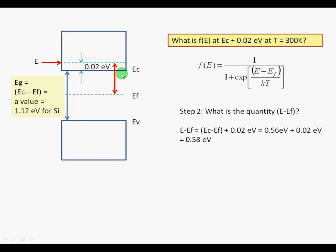For silicon, we know that Ec minus E F is 1.12 eV divided by 2, or 0.56 eV. So the quantity E minus E F is 0.56 eV for half the band gap, plus 0.02 eV for this small excess energy above E sub C.